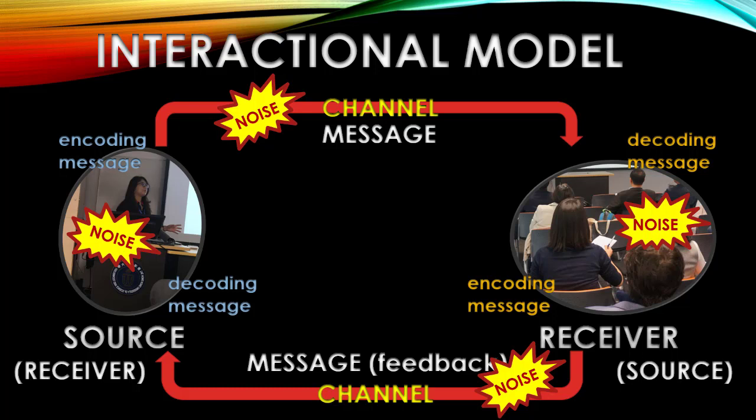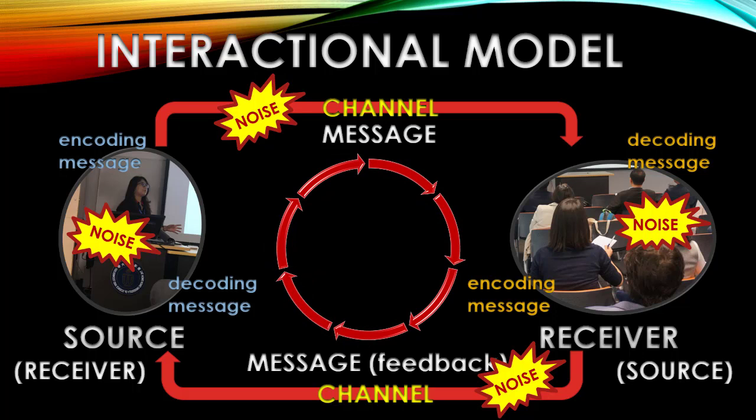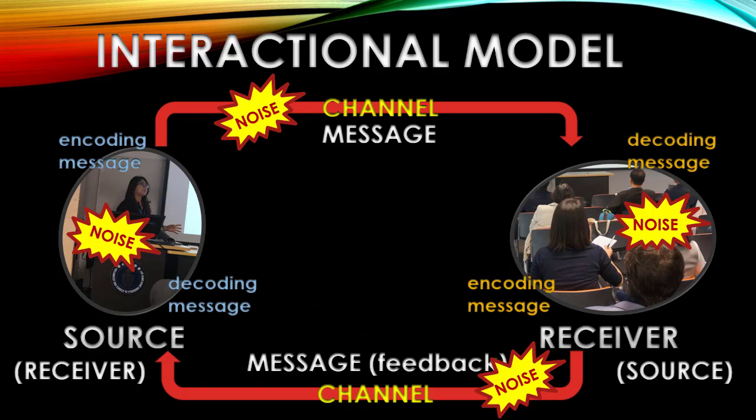So you can see that there's a lot of things very similar so far with the transmission model. We've got speaker encoding a message, sending that message through a channel. It's received by the receiver who decodes the message. And noise can disrupt this stuff. But the feedback loop that goes from receiver to source building in this circular turn-taking element to communication is something that's profoundly different than the transmission model.